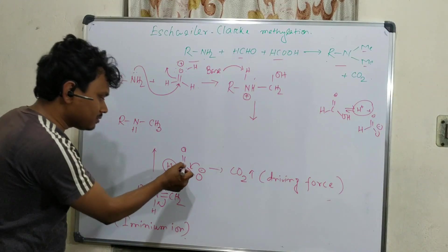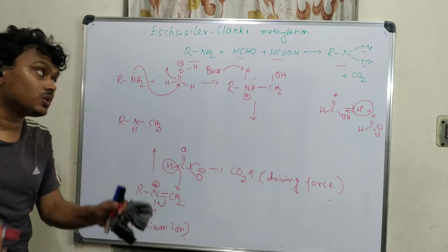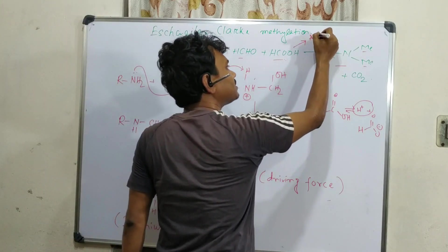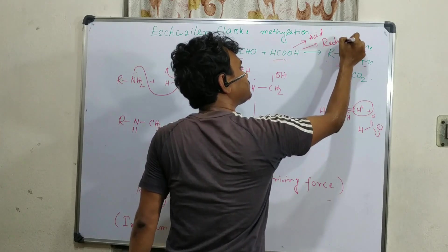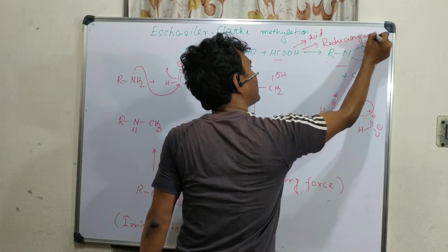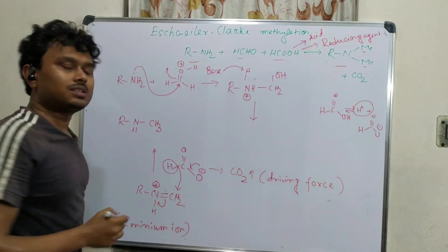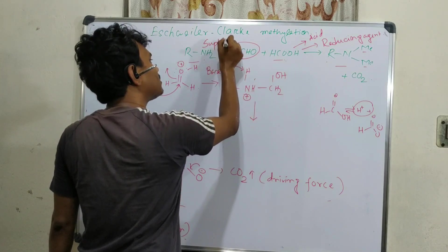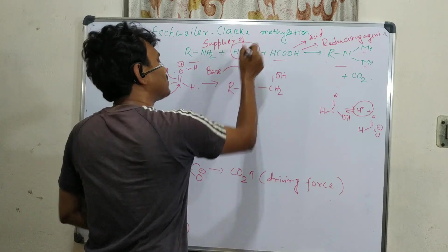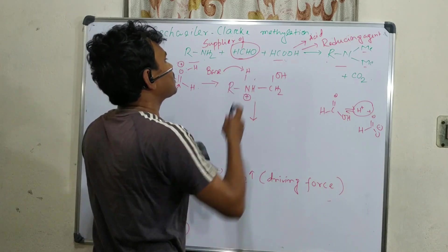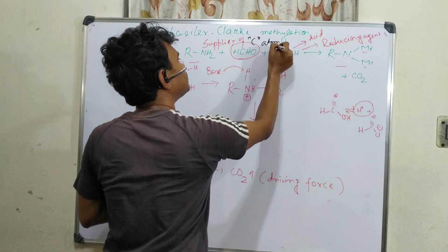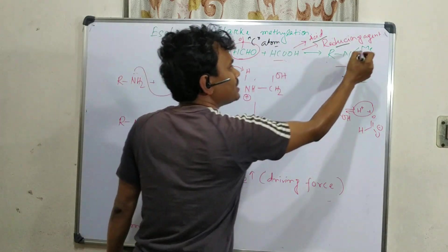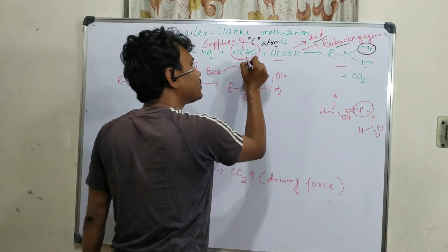So the role of formic acid is twofold: first, it acts as an acid; second, it acts as a reducing agent. The role of formaldehyde is as the supplier of the carbon atom. The carbon we are adding comes from formaldehyde — formic acid acts as acid and reducing agent, and formaldehyde supplies the carbon atom.